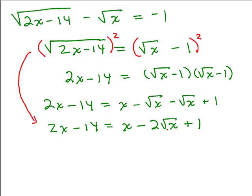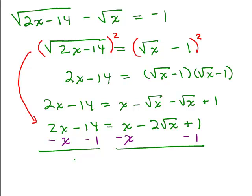I still have a square root here — this minus 2 square root of x — so now I need to isolate that. We want to subtract x from both sides and also subtract 1 from both sides. That will give me x minus 15 on the left side of the equation and negative 2 square root of x on the right side. I have a negative 2 in front of the square root of x. When you isolate a square root, it's okay to leave the coefficient in front of it.